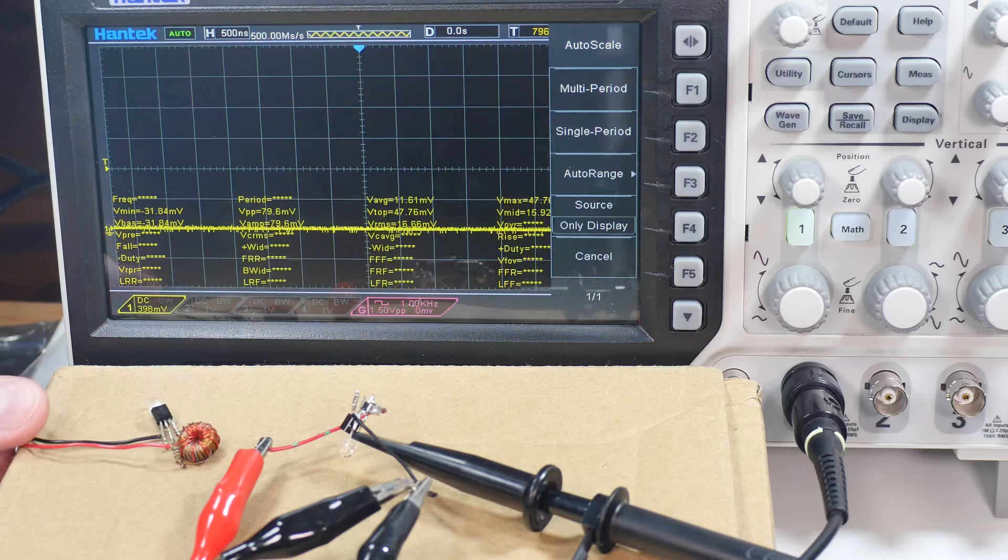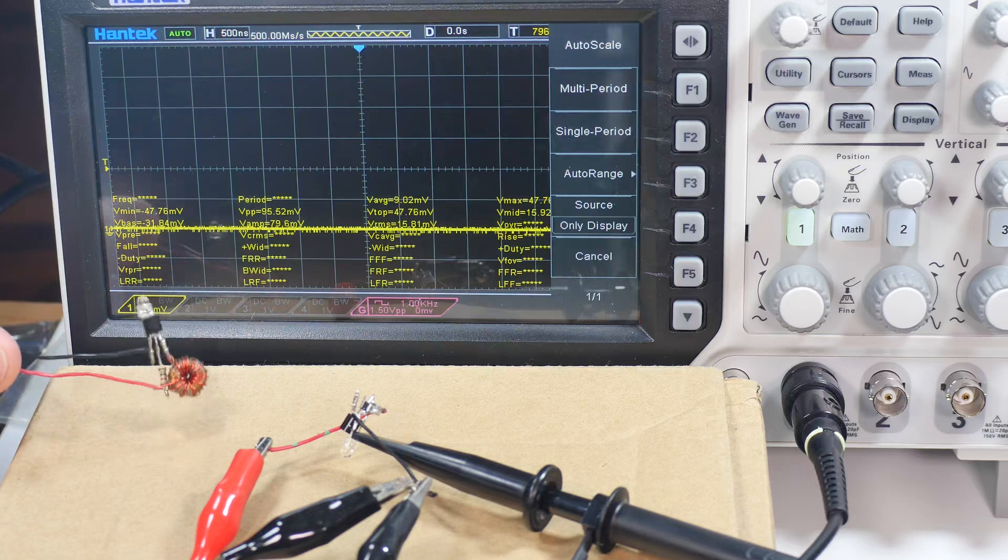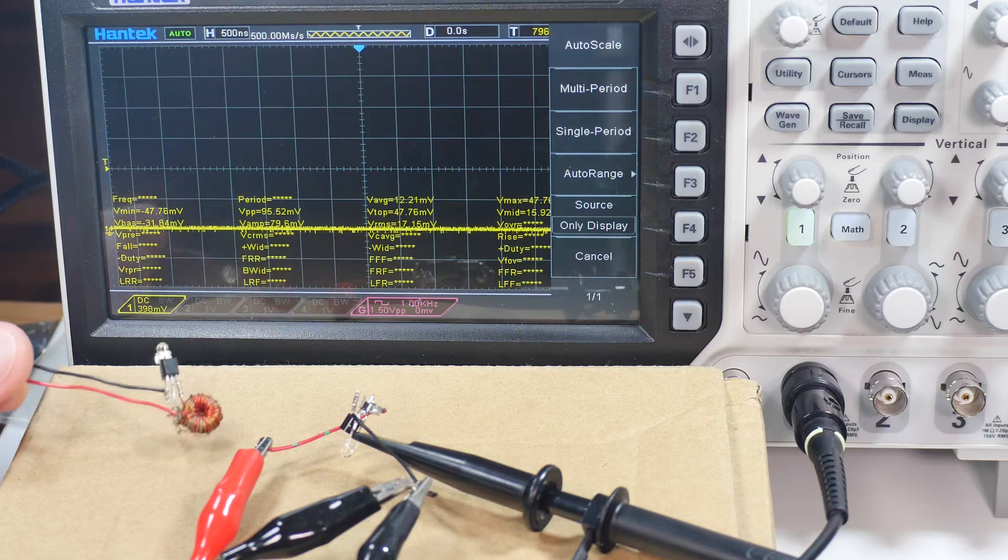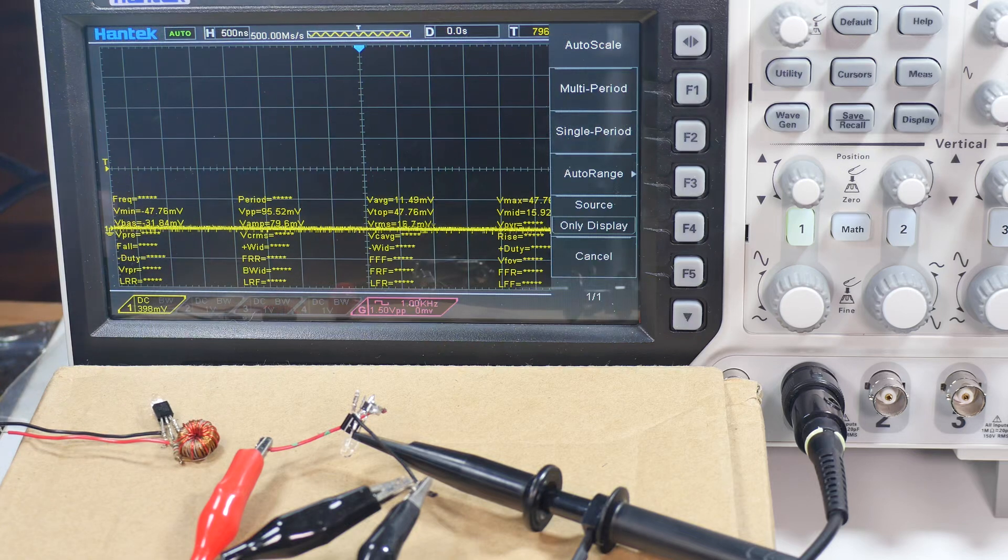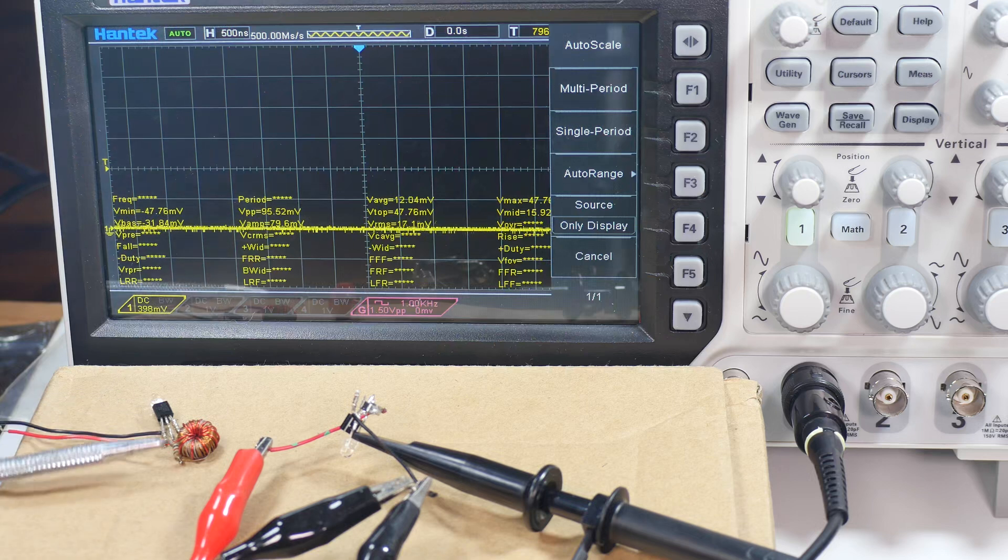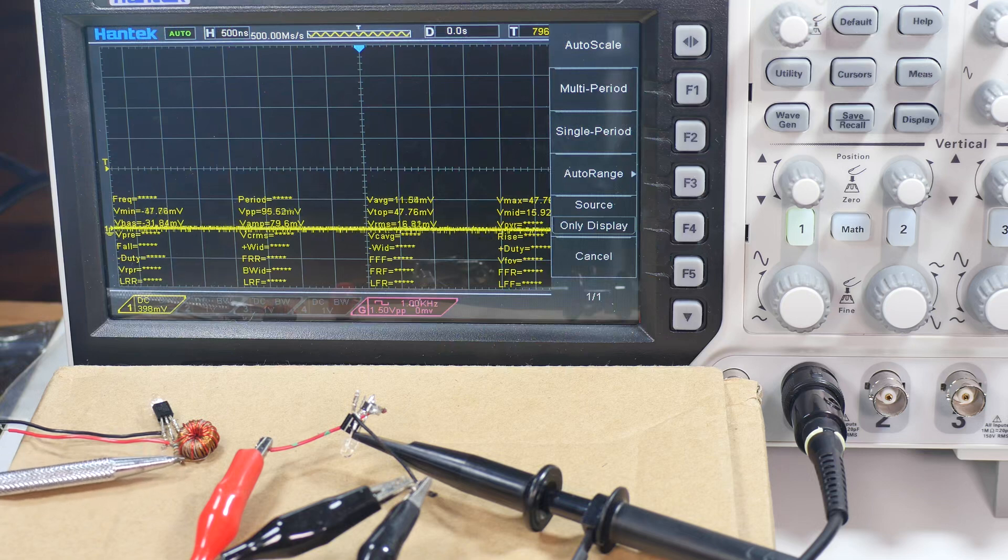I've been playing with joule thieves again and this is a pretty typical one. I did a video recently on the frequency of this and typically these things run between 12 and 25 kilohertz, so roughly in the range of human hearing actually.